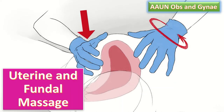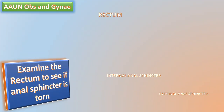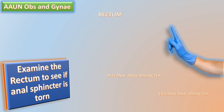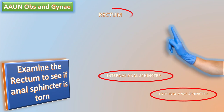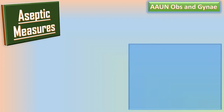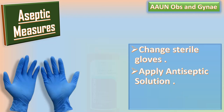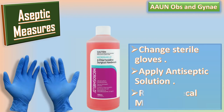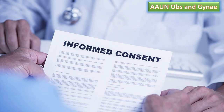Ask an assistant to provide uterine and perineal massage. Then examine the rectum to see if the anal sphincter is torn — place a gloved finger in the anus and lift slightly to identify the sphincter or lack of it. Feel the rectum and look carefully for the tear. Next, apply aseptic solution on the tear and remove any fecal material present.